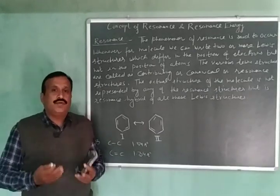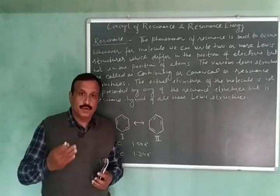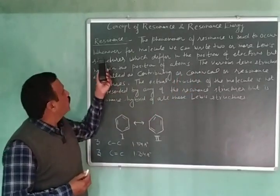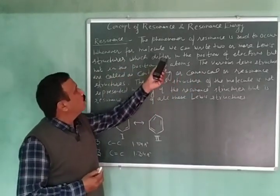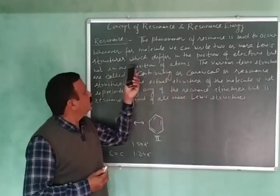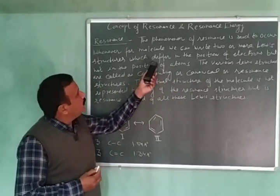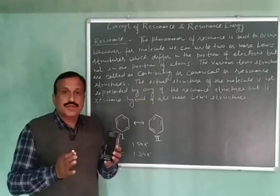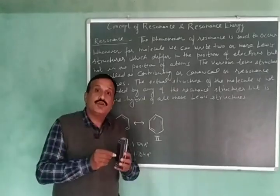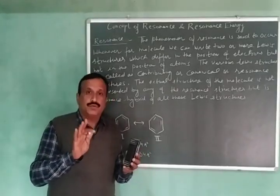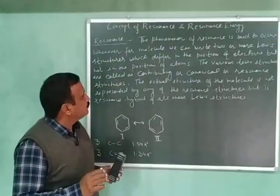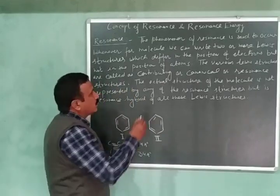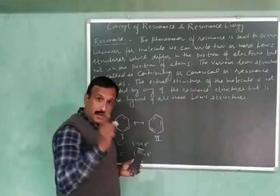So let us now define the phenomenon of resonance. The phenomenon of resonance is said to occur whenever, for a molecule, we can write two or more Lewis structures which differ in the position of electrons but not in the position of atoms. The various Lewis structures are called as contributing, or canonical, or resonance structures.